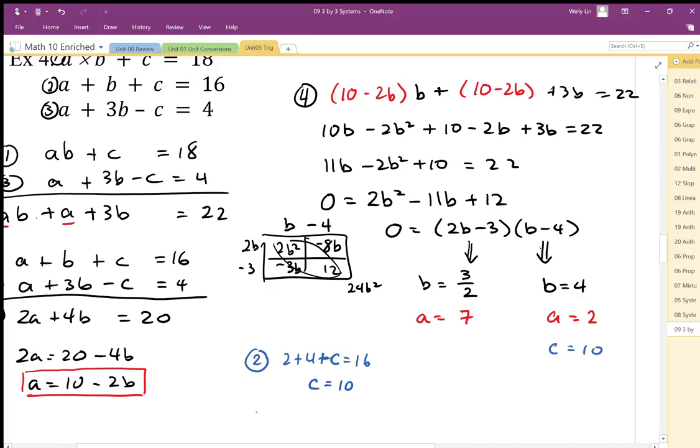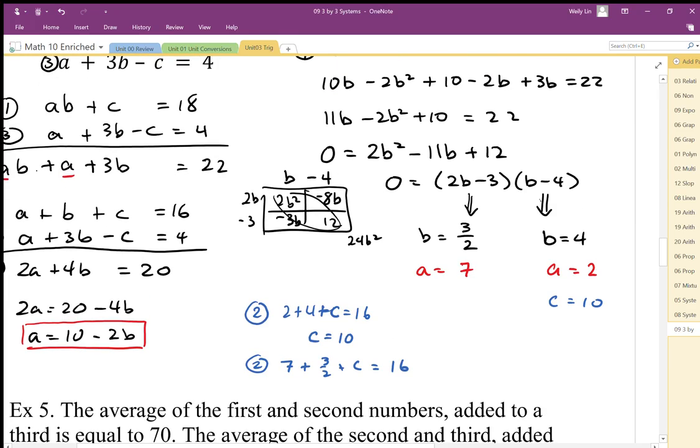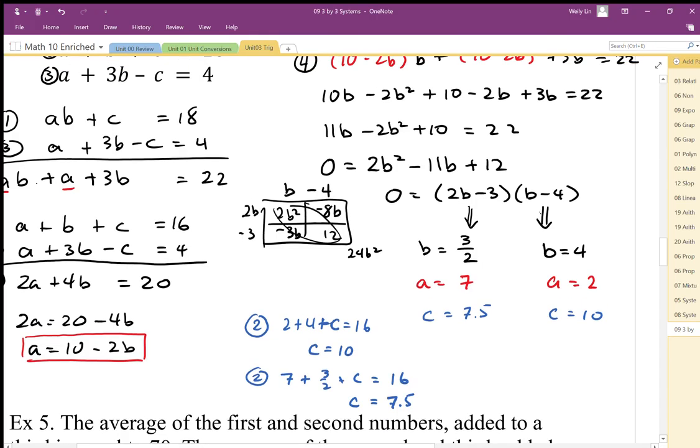And then for equation 2, I can plug in these values, a plus b plus c equals 16. So this is 8.5 plus c equals 16. So c is equal to 7.5. So here c is equal to 7.5. And this represents solutions to this equation.